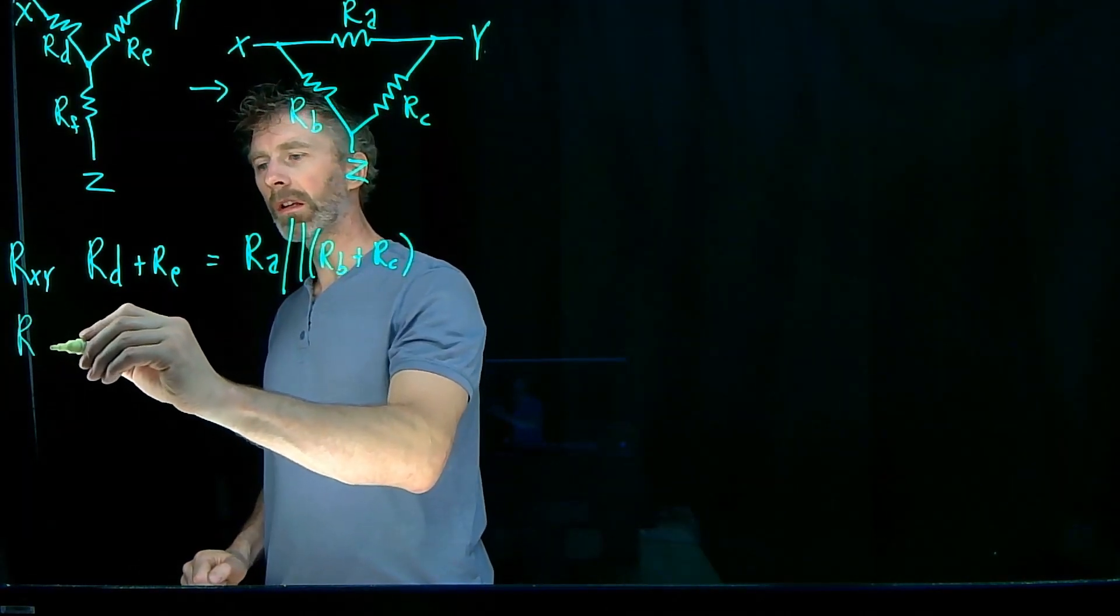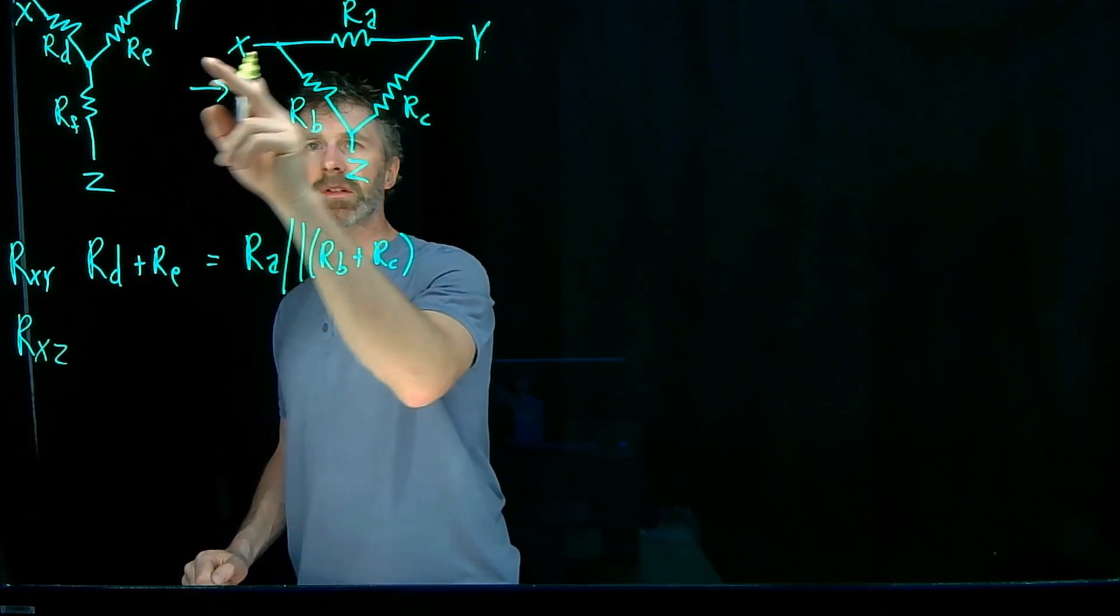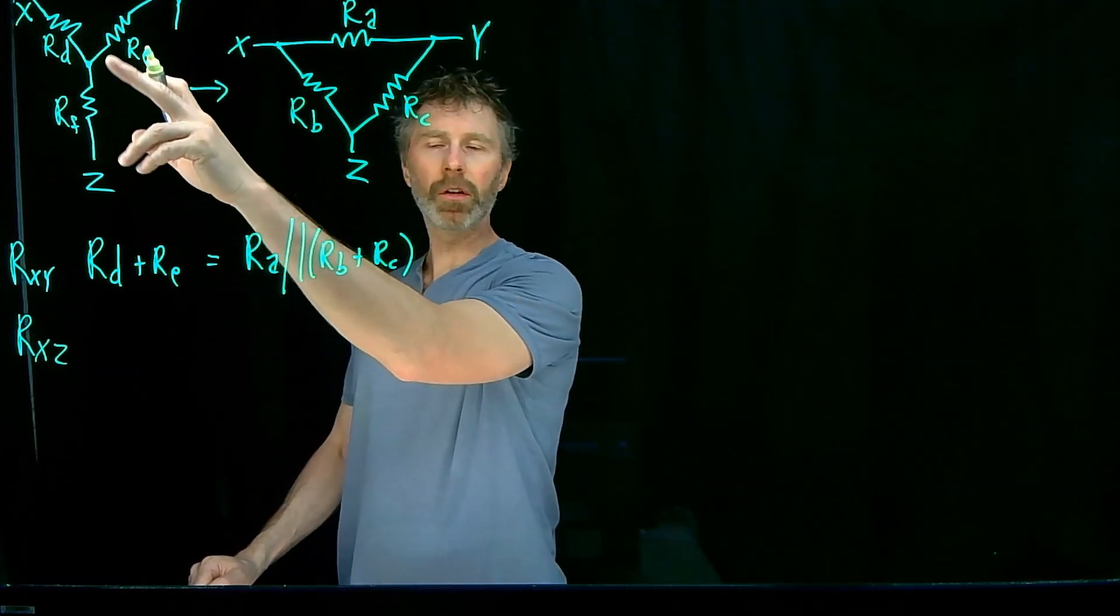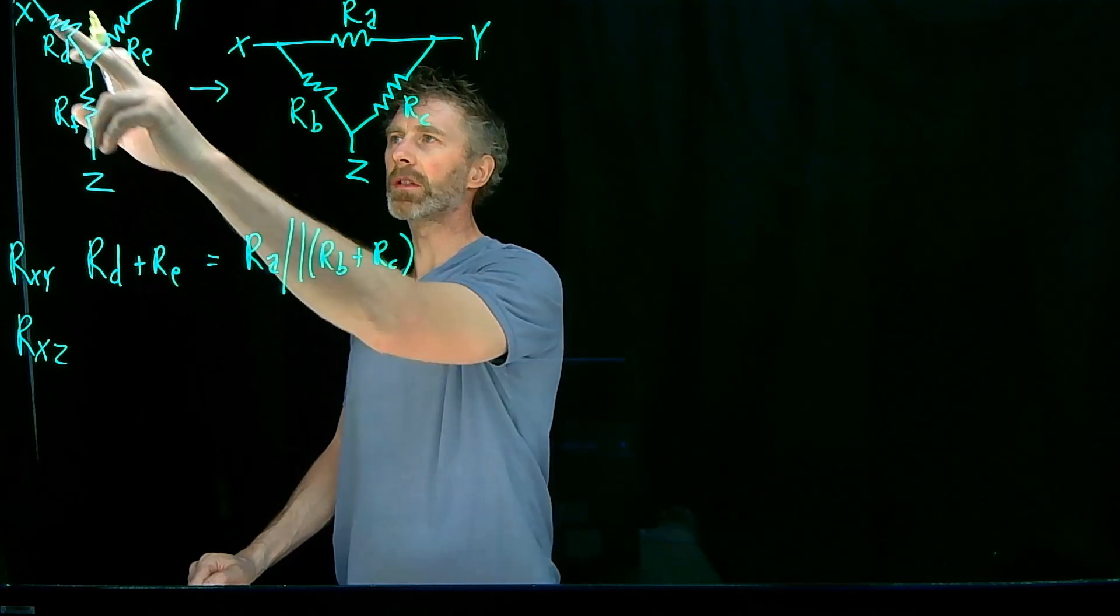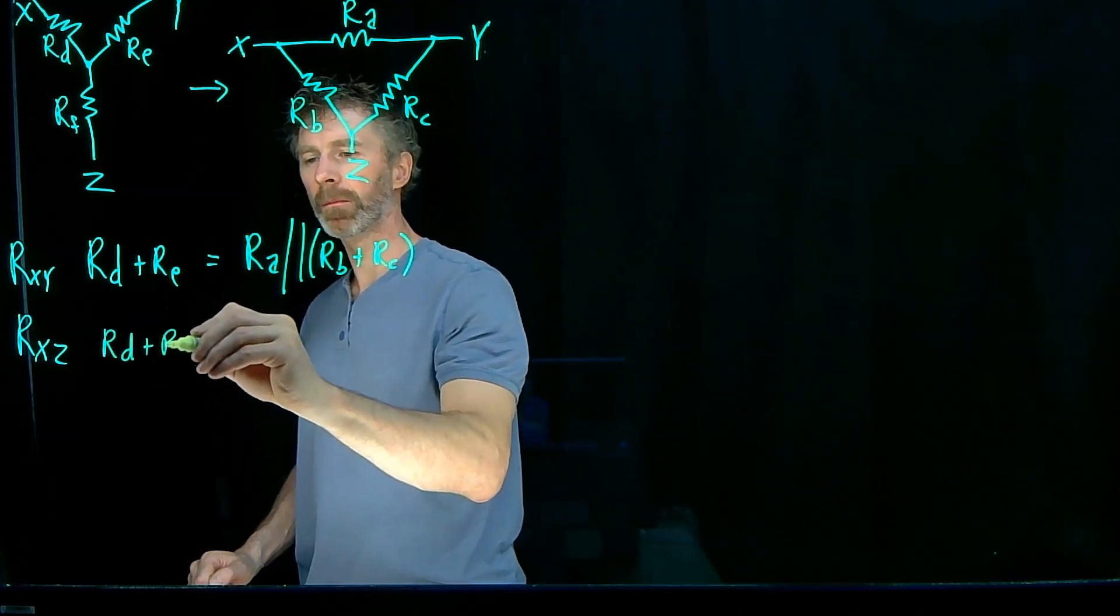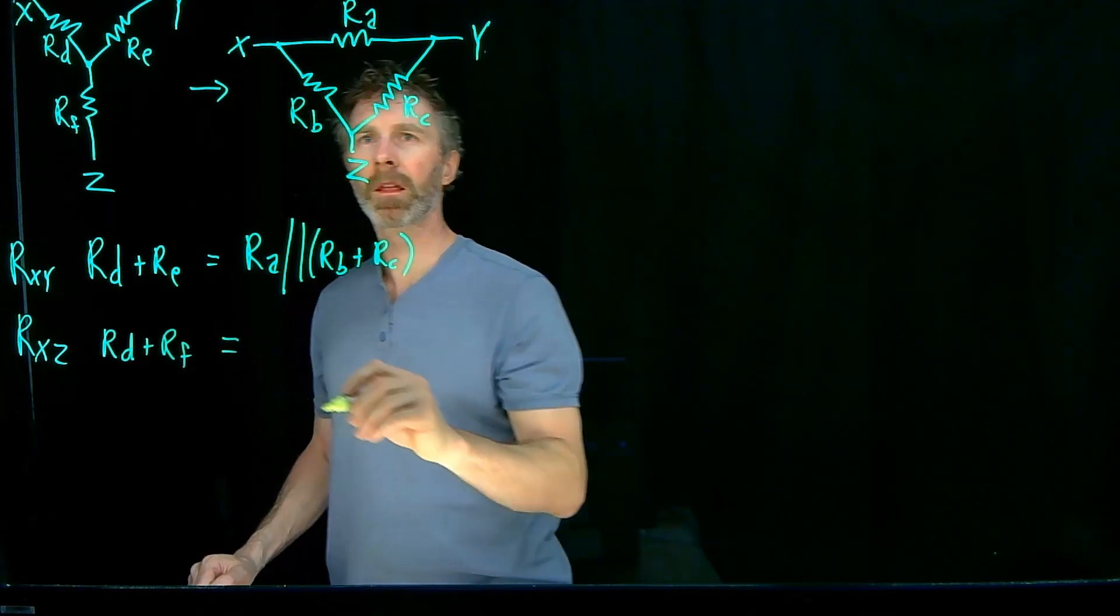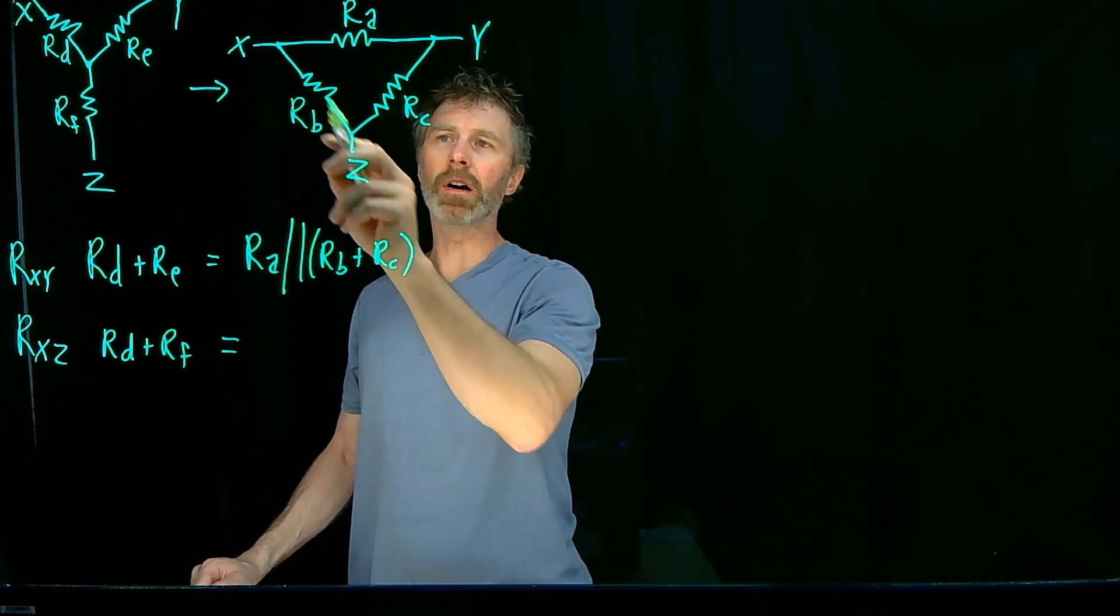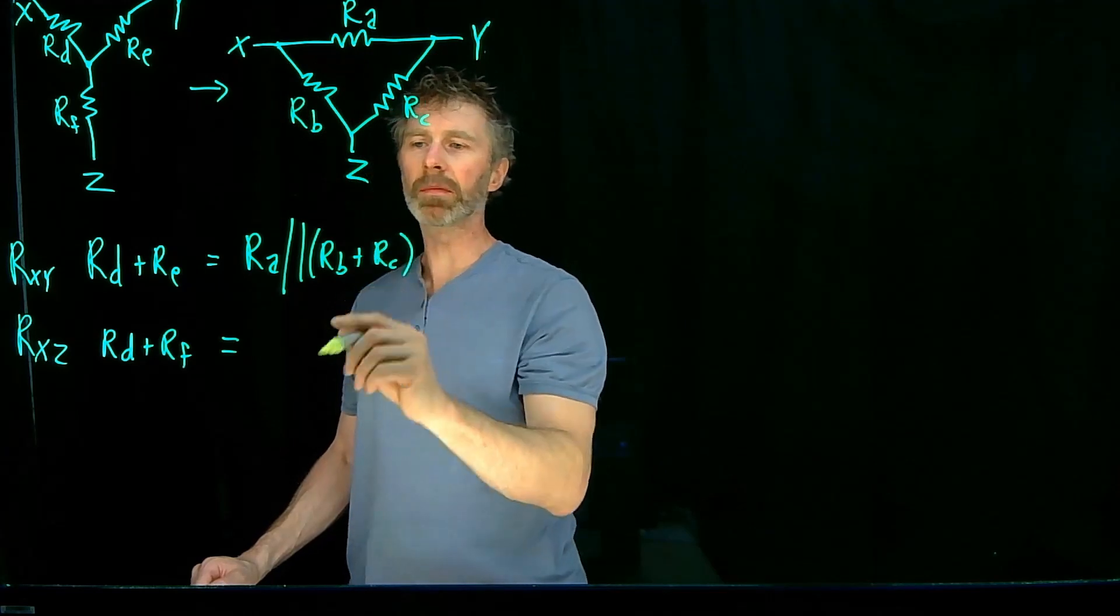We also need the X, Z resistances to be equal. Over here in the Y configuration, the resistance between X and Z is simply RD plus RF. But over here in the X, Z is going to be RB in parallel with RA plus RC.